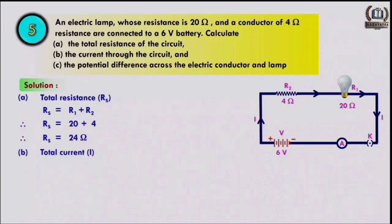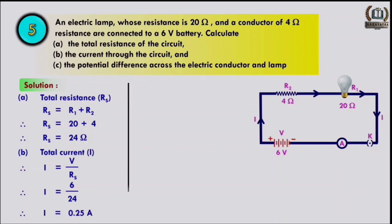The total current I = V/Rs. Putting in the values, I = 6 volt divided by 24 ohm, therefore current I equals 0.25 ampere.